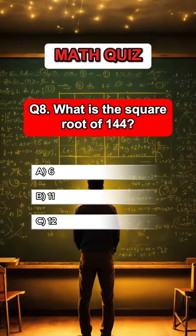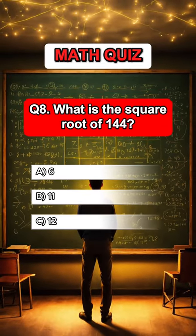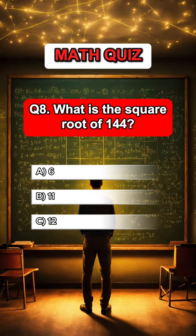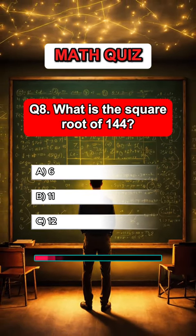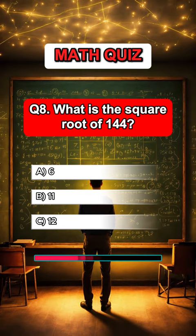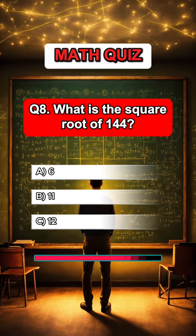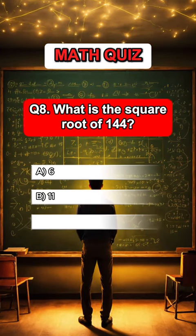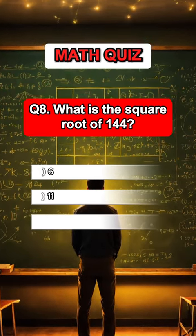Question 8. What is the square root of 144? Answer C, 12.